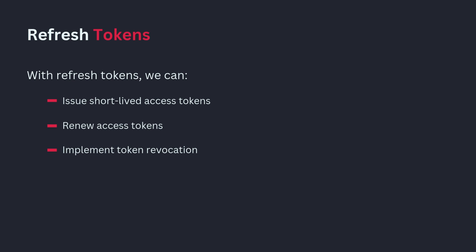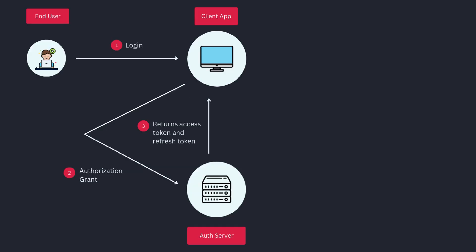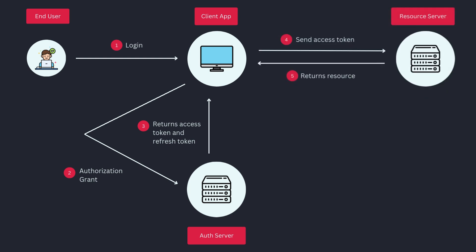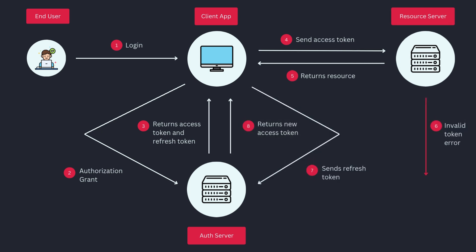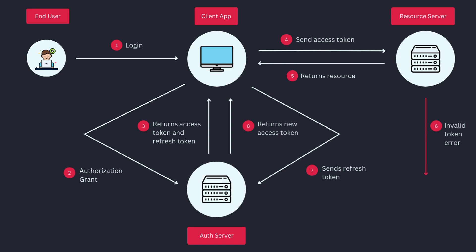When a user logs in, the server issues two tokens: a short-lived access token for authentication, and a longer-lived refresh token to get a new access token when the old one expires. The client stores these tokens securely — typically the access token in memory and the refresh token in a secure HTTP-only cookie or another storage method. The client uses the access token to access resources. When the access token expires, instead of logging the user out, the client sends the refresh token to a special endpoint. The server validates the refresh token and, if valid, issues a new access token.